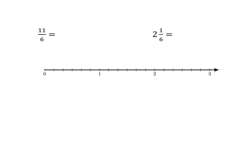Now I want you to check you've got this right. Pause the video and try this in your homework books. Turn eleven-sixths into a mixed number, turn two and one-sixth into an improper fraction, and show me where both of those sit on the number line. Pause the video and try it now.